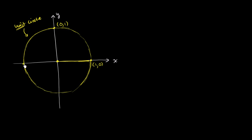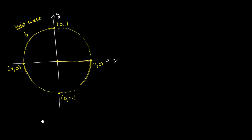What about back here? Here our x value is negative 1. We've moved 1 to the left and we haven't moved up or down, so our y value is 0. And what about down here? We've gone a unit down, or one below the origin, but we haven't moved in the x or y direction. So our x is 0, and our y is negative 1.